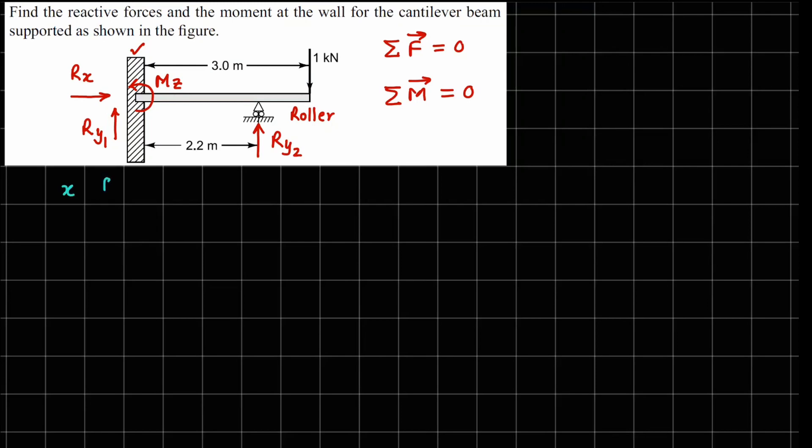So when you apply these equations for x force, what do we see? We have only this Rx force there, there is no other force on this member in the x direction. So Rx has to be equals to 0.